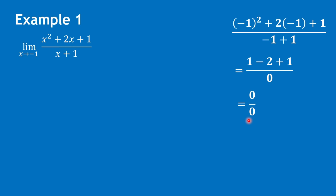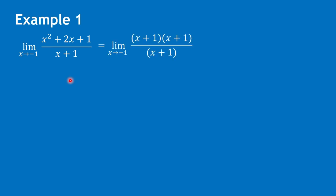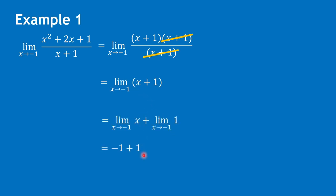Therefore, we need to do further work to identify the limit of this function, and that would be factoring. The numerator can be written as x plus 1 times x plus 1. We can cancel x plus 1 from the numerator and denominator, giving us the limit of x plus 1 as x approaches negative 1. Substituting negative 1 gives negative 1 plus 1, so the limit for example 1 is 0.